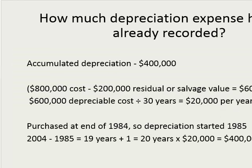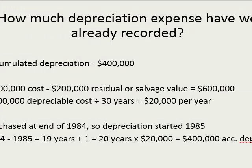The first step is we need to figure out how much depreciation expense has already been recorded, and that amount is actually given to us in the problem. We can also figure out how that amount was calculated: the original $800,000 cost minus the original estimate of the residual or salvage value of $200,000 equals $600,000. That amount is the depreciable cost — the amount we originally planned on depreciating. The useful life was originally estimated to be 30 years, so the annual depreciation expense was $20,000 per year.